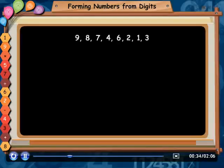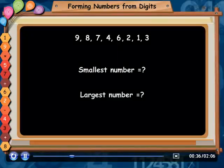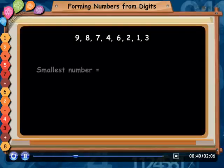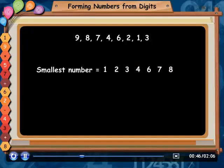Let us make the smallest and largest number from the given digits. So, for the smallest number, we write the digits in ascending order, like this. Smallest number is equal to 12346789.